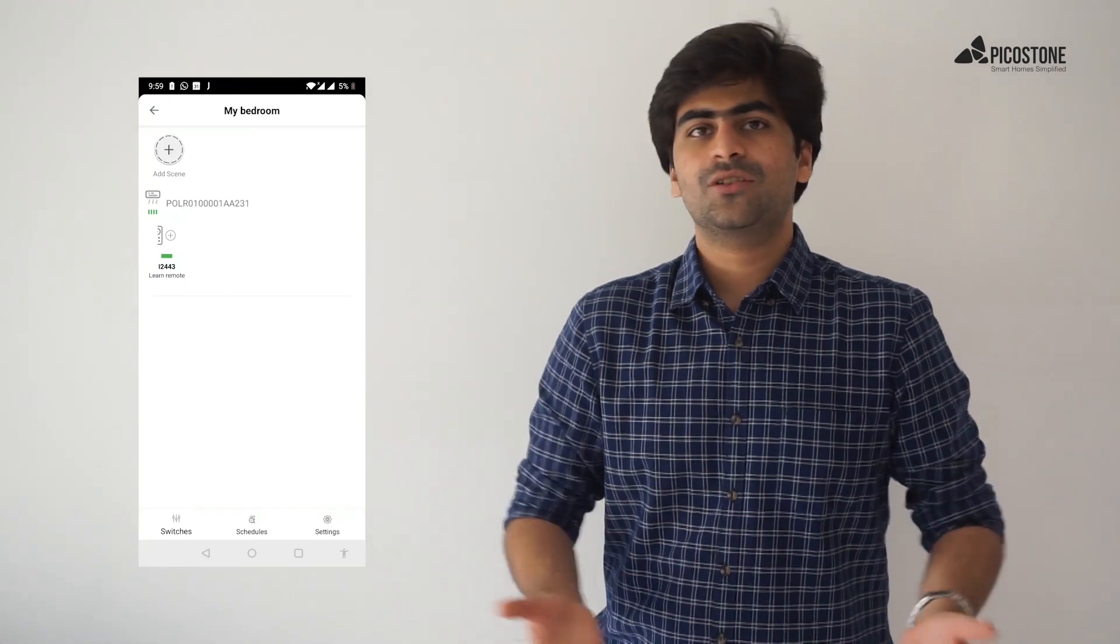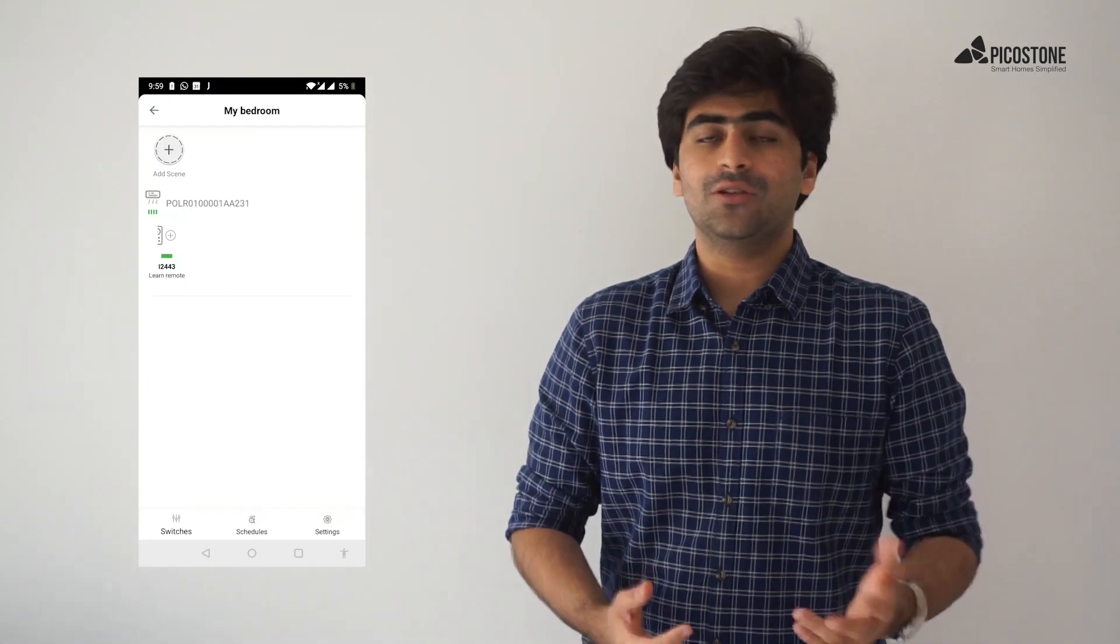Now let's get down to how you control your particular device. That means you need to set up your node to mimic the particular remote you want to control. To do that, go into the room, go into the particular node you just paired with your device, and tap onto that.